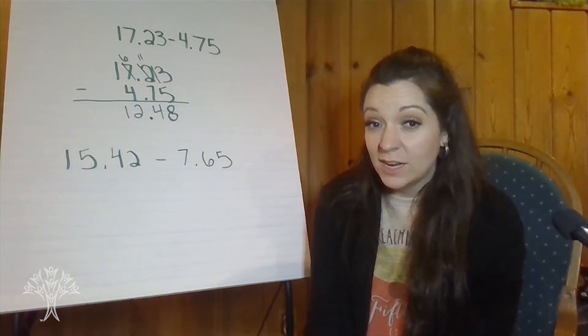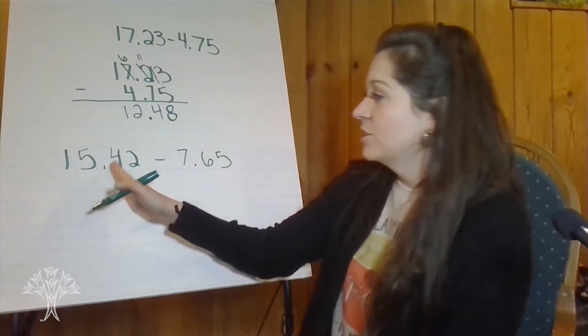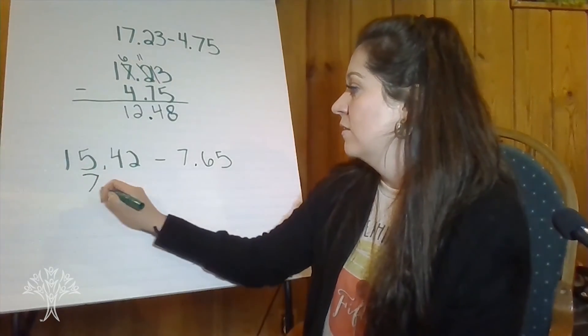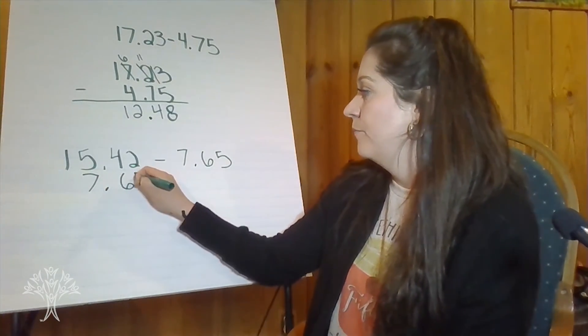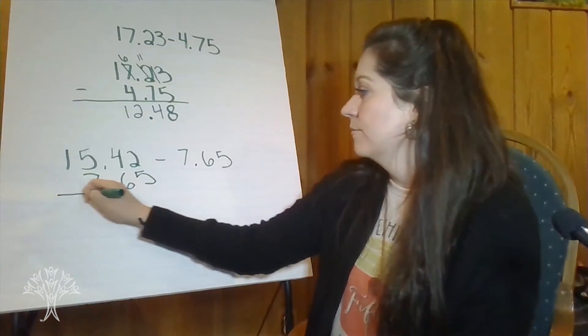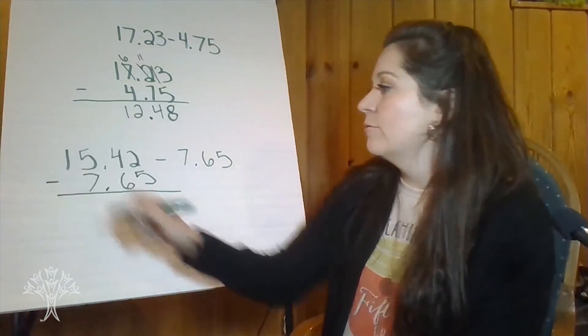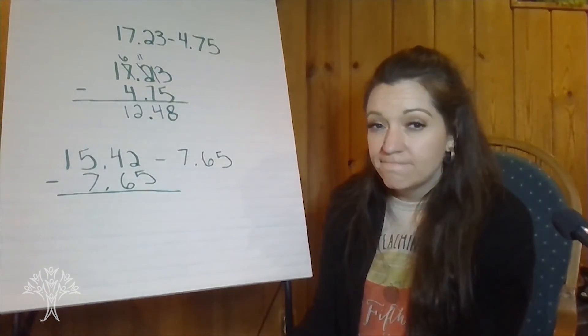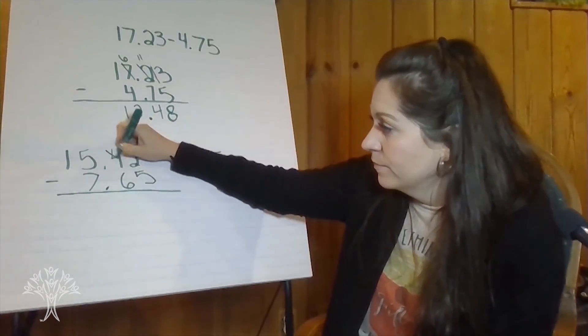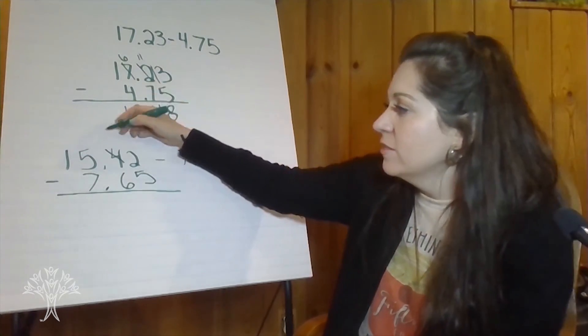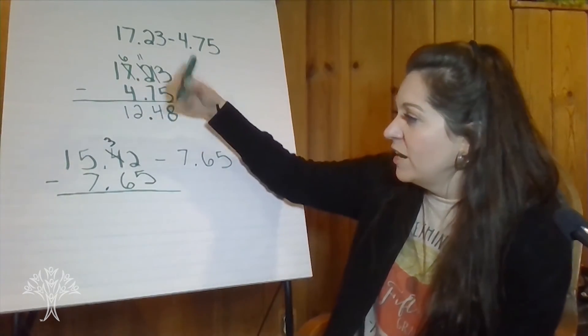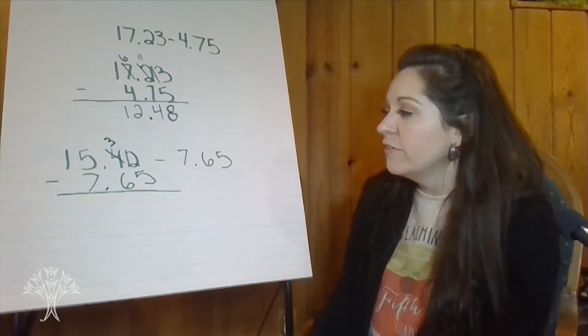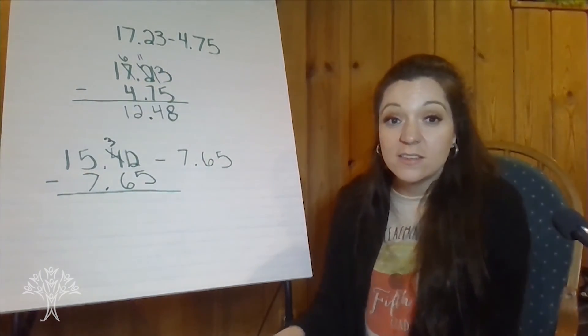Okay, did you make sure to line up your decimals? I'm just going to use this already written. Okay, we're subtracting. Two hundredths take away five hundredths. Can't do that yet. So regroup from the tenths. We take one of those tenths and we break it up into ten hundredths. So now we have twelve hundredths take away five hundredths. What do we have?